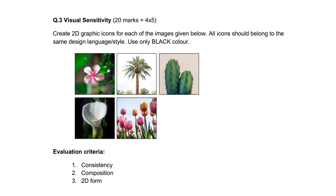The question asks you to create 2D icons for these images. The test of visual sensitivity is about identifying how close we can get to these organic elements shown in the image. Observe here that the question says all icons should belong to the same design language. This simply means that each icon should have similar shapes and similar attributes like line, color, shape, or texture. I'll try to illustrate this better as we move ahead with the question.